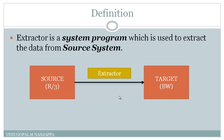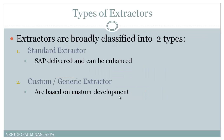The extractors are broadly classified into two types: one is standard extractor and the other is custom or generic extractor. As the name indicates, standard extractors are SAP-delivered objects which can be enhanced if we want to do some slight customization, like adding a few fields. Whereas custom or generic extractors are completely custom developed by developers like us.